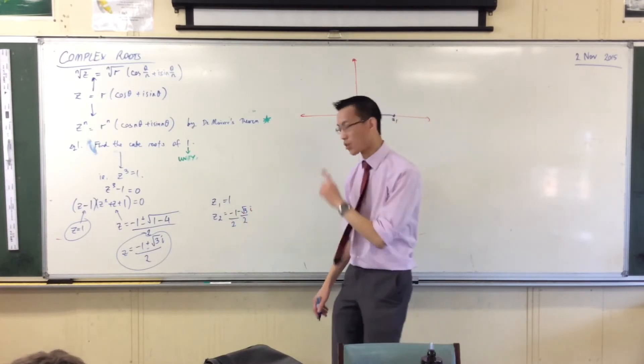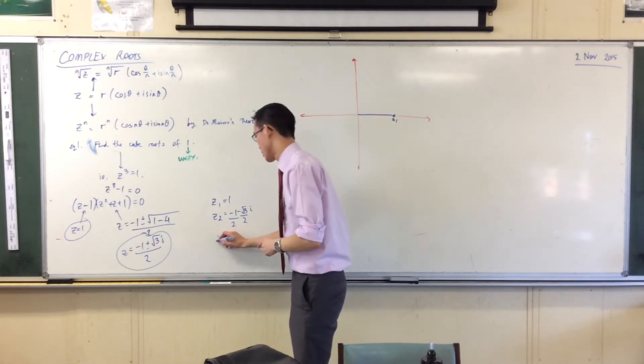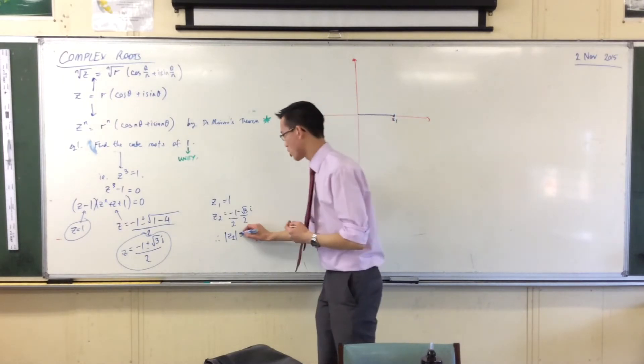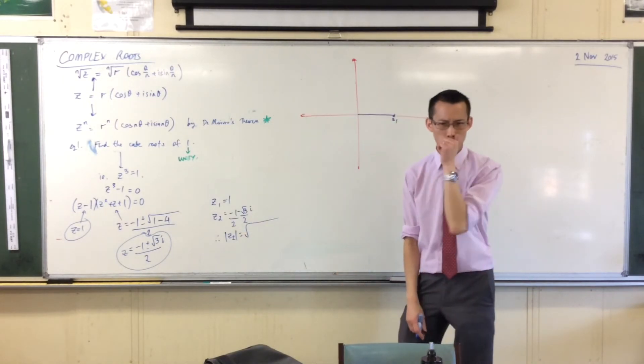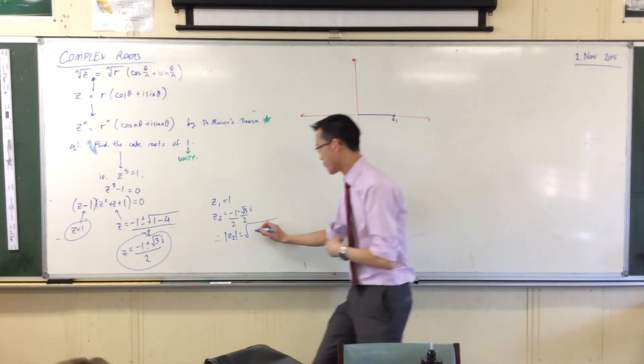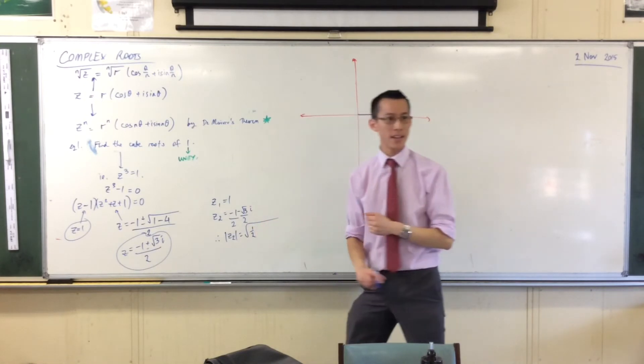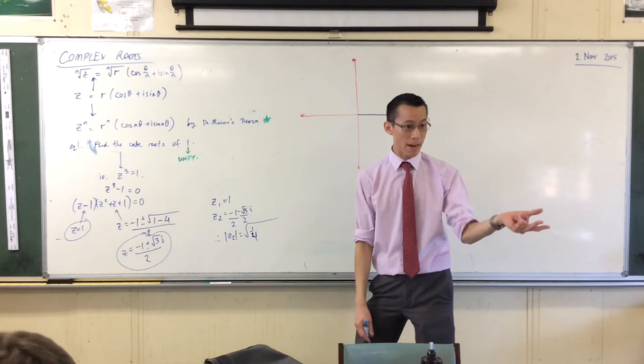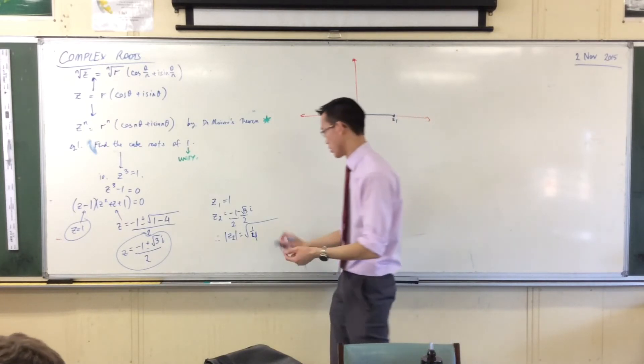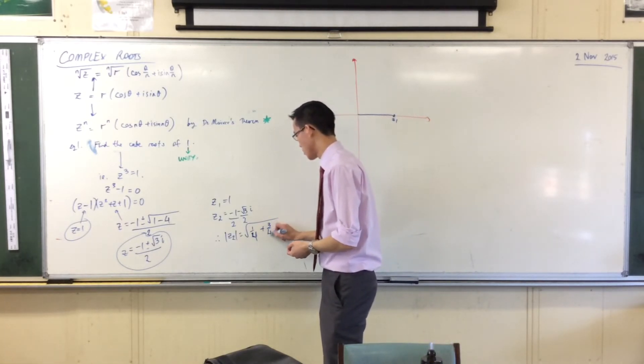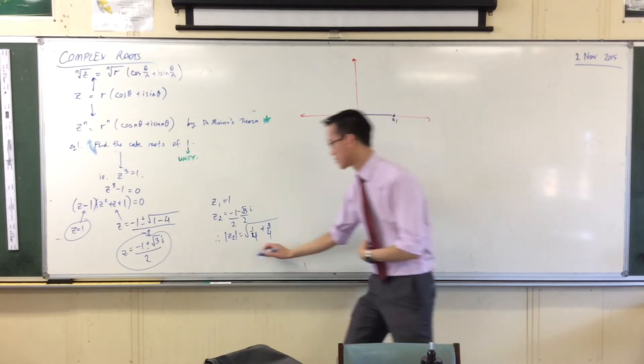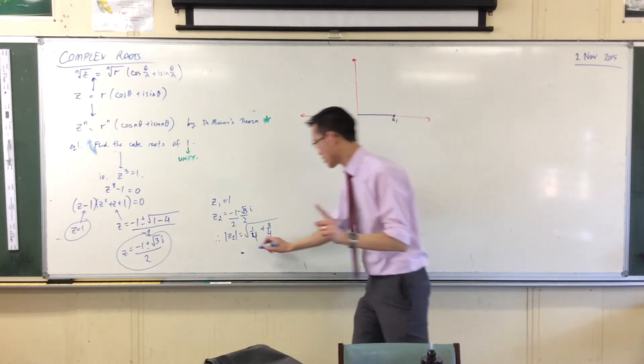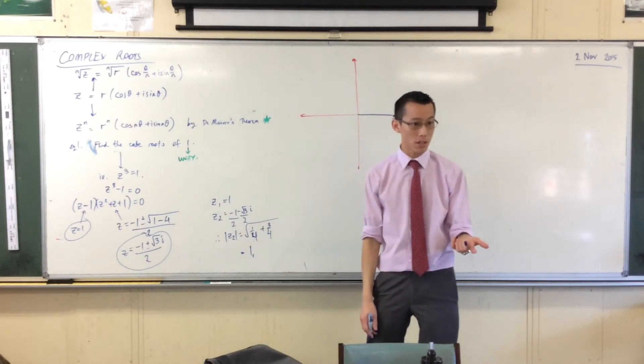To work out the modulus of Z2, that's the square root of what? The real part squared, which is a quarter, and then there's the imaginary part squared, which is 3 quarters. Square root of 1, that's just 1. There's the modulus.